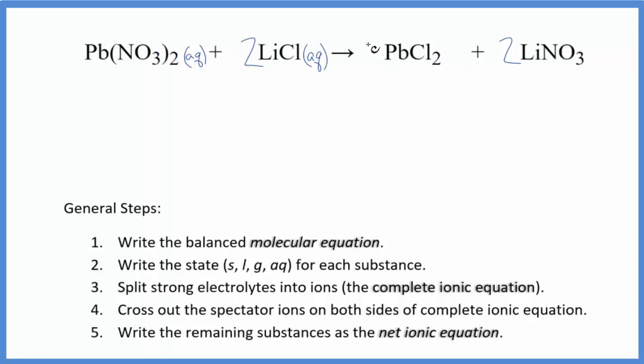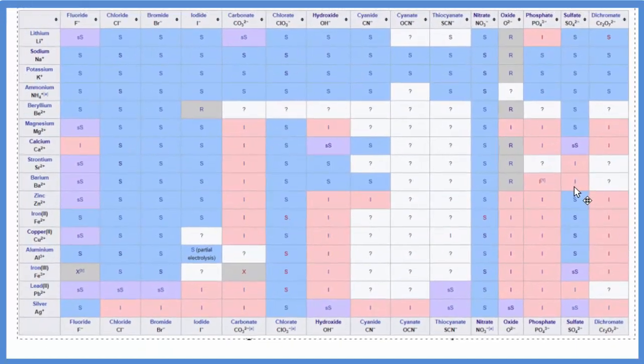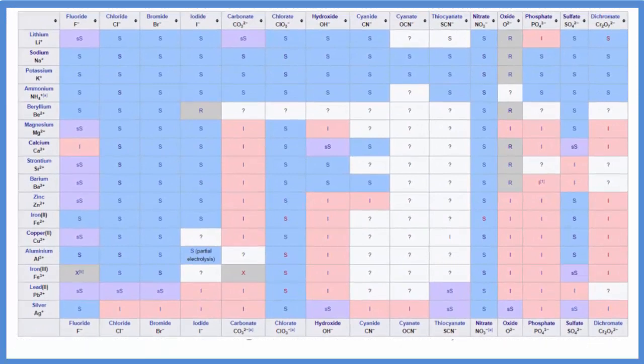But we have this lead chloride, lead 2 chloride. Whenever I see lead, I'm very cautious. So let's look this up on a solubility table. So here's a solubility table. And we'll find lead, which is on the positive ions. Lead 2 is right here.